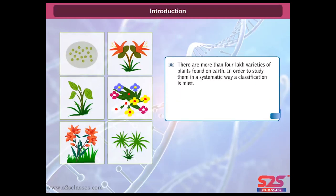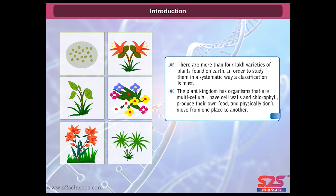There are more than four lakh varieties of plants found on earth. In order to study them in a systematic way, a classification is must. The plant kingdom has organisms that are multicellular, have cell walls and chlorophyll, produce their own food, and physically don't move from one place to another.